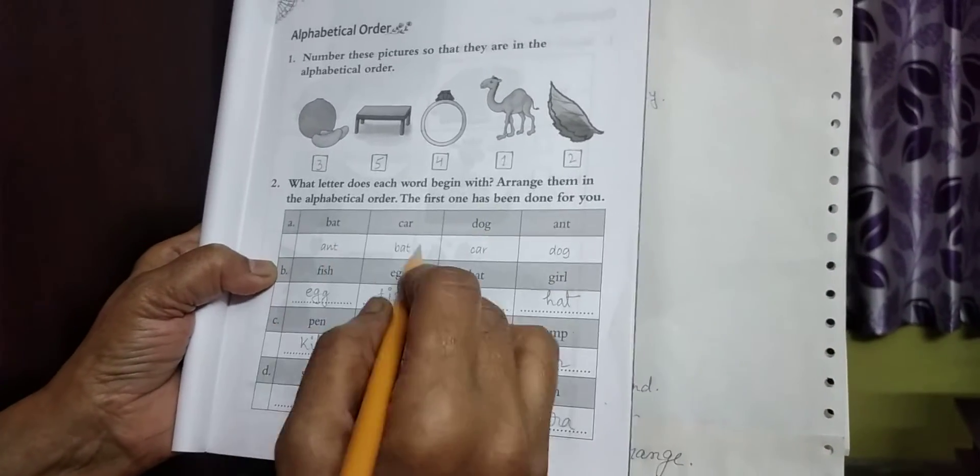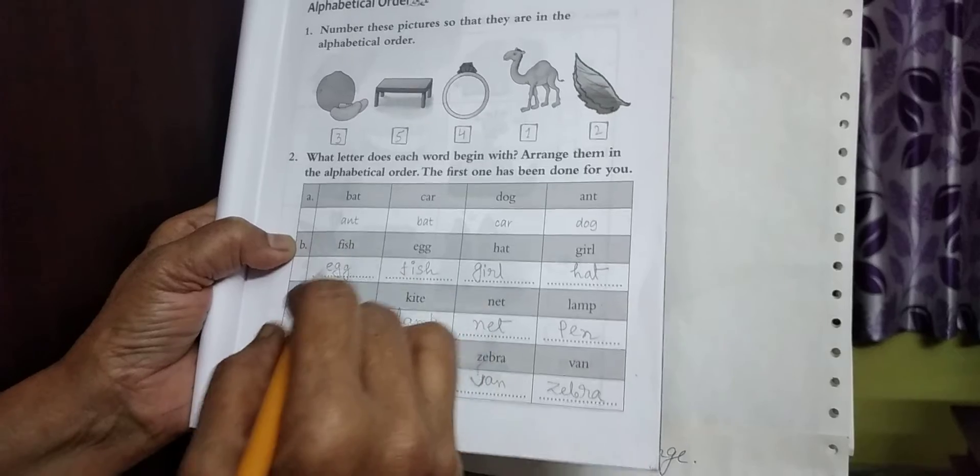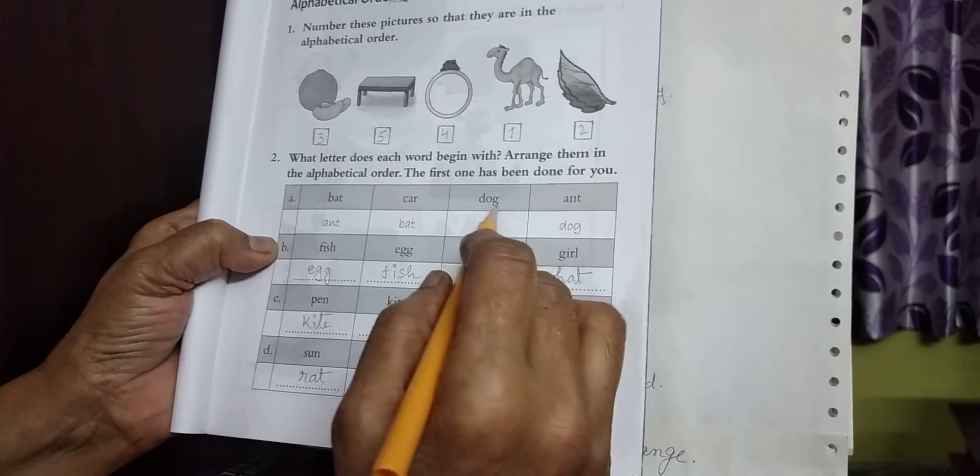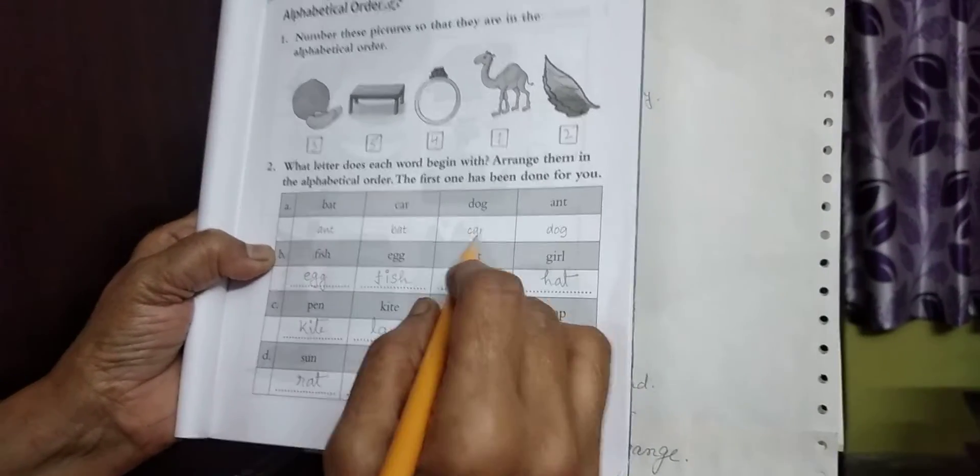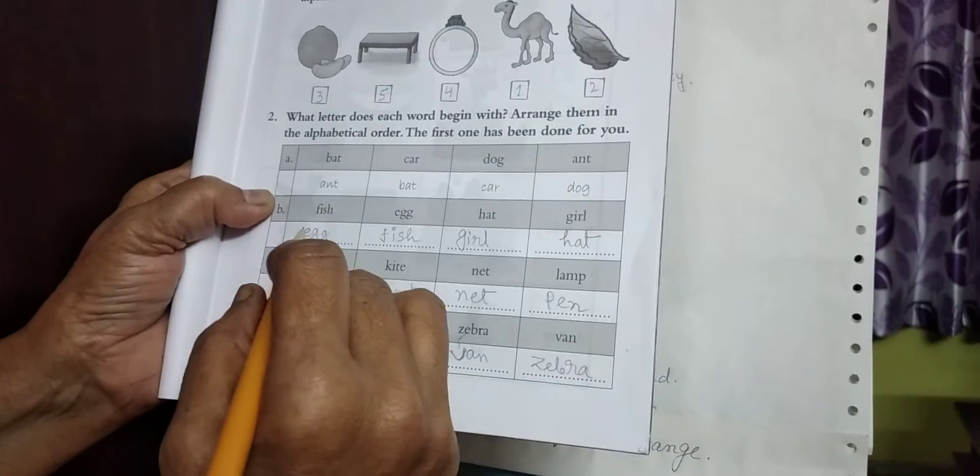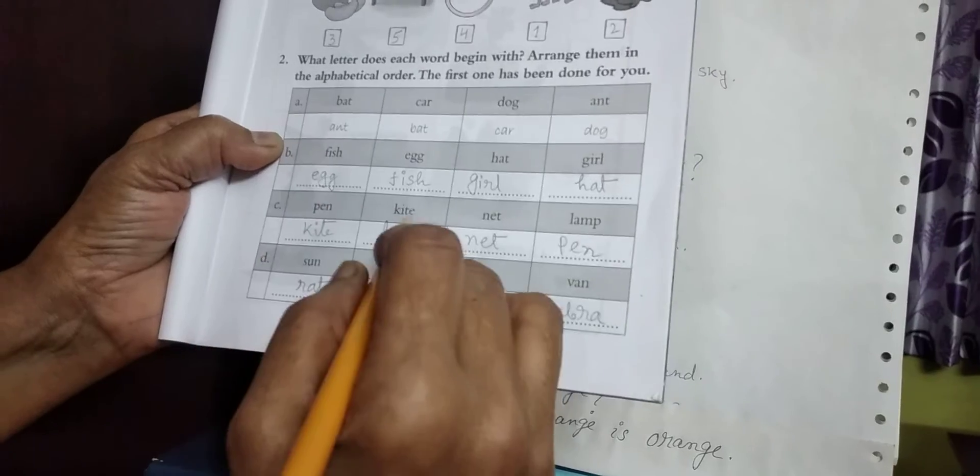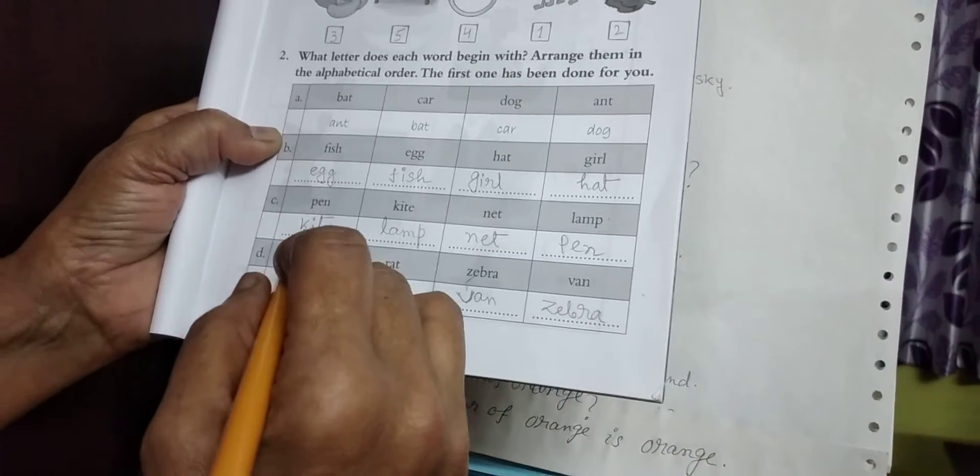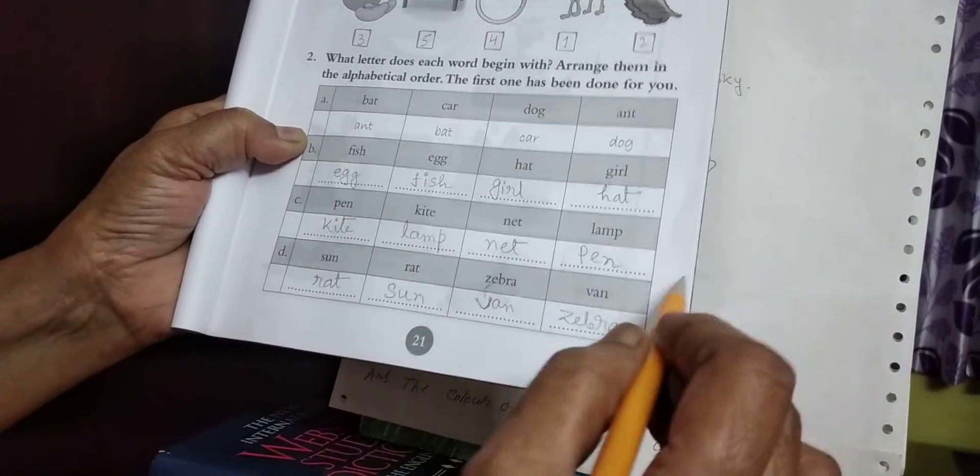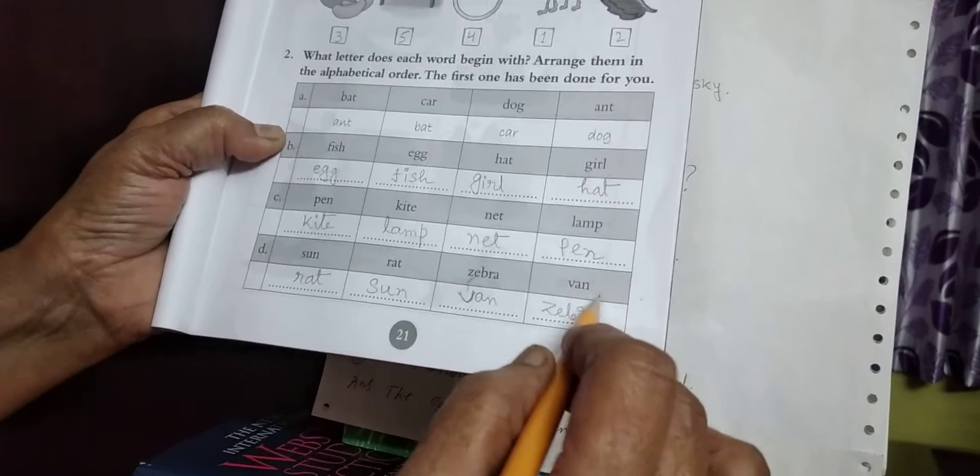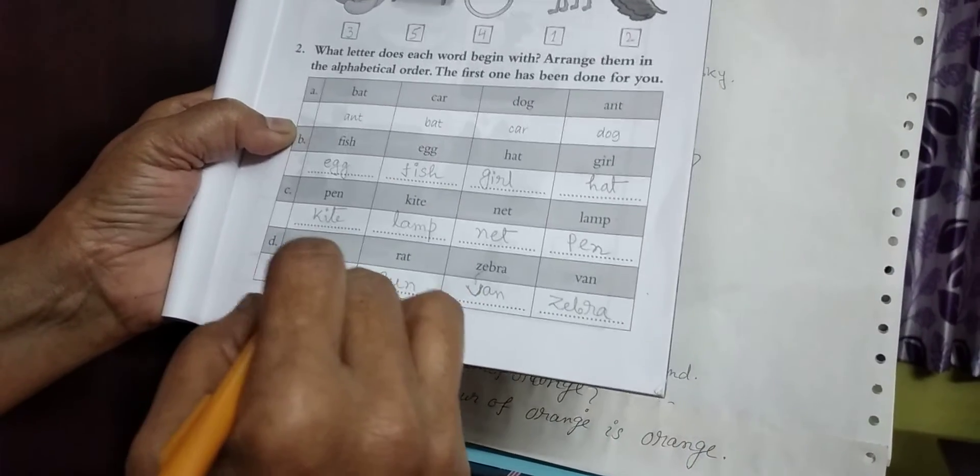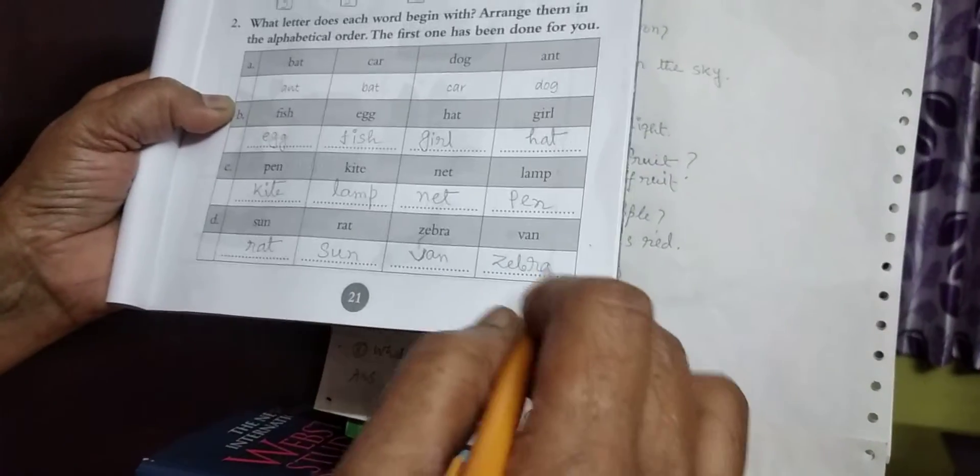Look, alphabetical order arrangement. Here is ant, bat, cart, dog. Here is bat, cart, dog, ant. So it's ant, bat, cart, dog. Here is fish, egg, hat, girl. Here it becomes egg, fish, girl, hat. Here what happened? Pen, kite, net, lamp. Here it becomes kite, lamp, net, pen. Here is sun, rat, zebra, hen. In alphabetical order: rat, sun, hen, zebra.